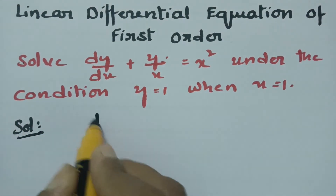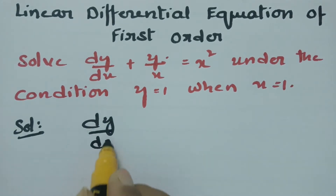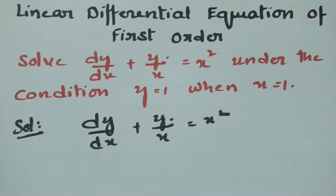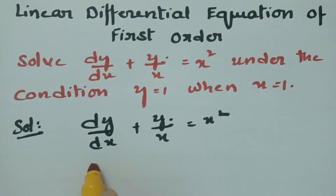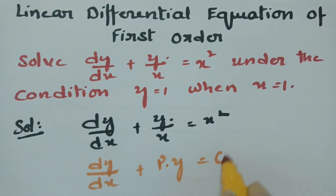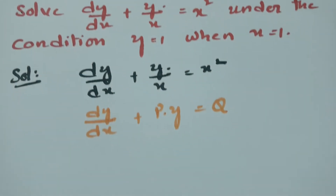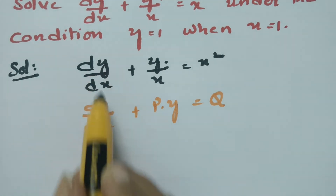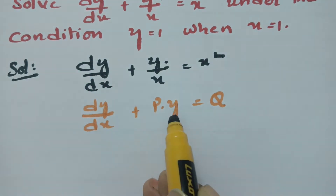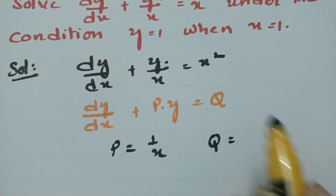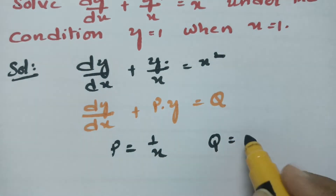See here what is given: dy/dx plus y/x equals x squared. This is the linear differential equation. When we compare this equation with dy/dx plus py equals q, here p is equal to 1/x and q is equal to x squared.